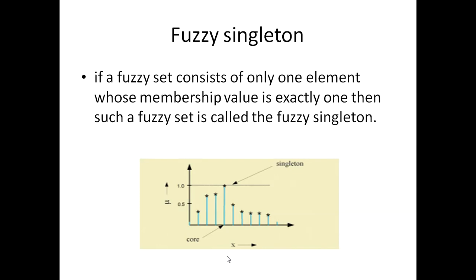The next one is called fuzzy singleton. This is basically one specific fuzzy set that is having different members. If the membership value of this fuzzy set has only one membership value that is exactly one and not others — meaning there are a lot of membership values in the fuzzy set, but only one of them is 1 — then in that case we will say that fuzzy set is a fuzzy singleton. So any fuzzy set that is having only one membership value equal to 1 will be called a fuzzy singleton.